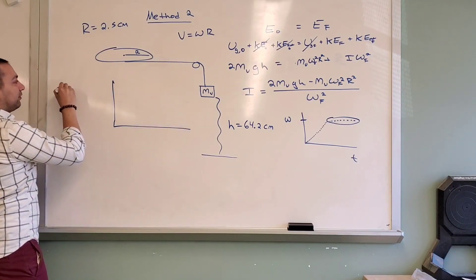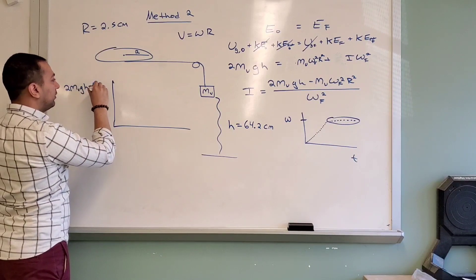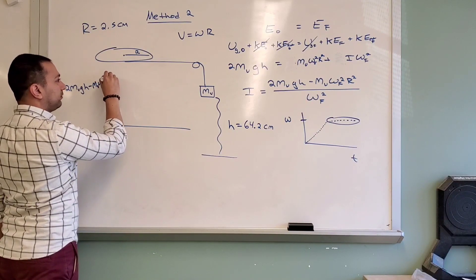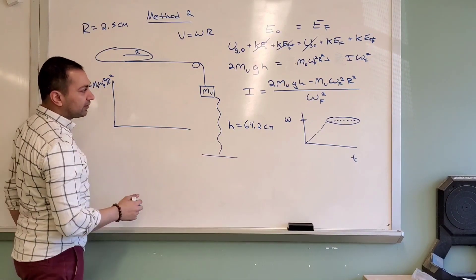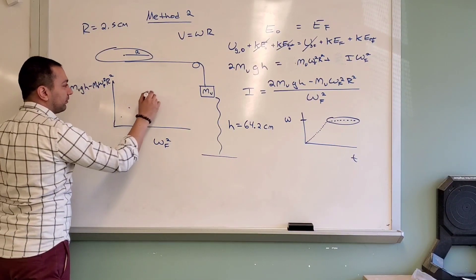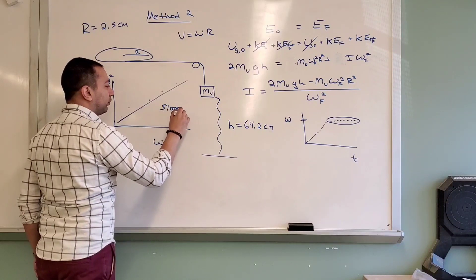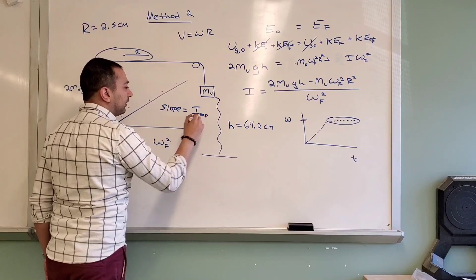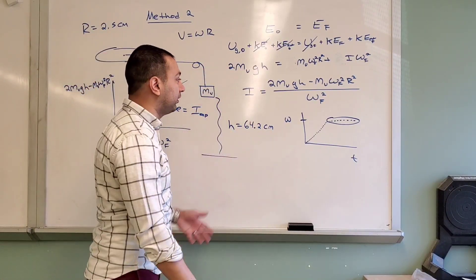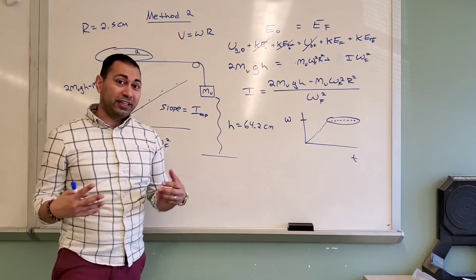For plotting Method 2, the y-axis is 2*m_v*g*h minus m_v*omega_final squared*r squared, and the x-axis is omega_final squared. You plot the points for each trial, draw the best fit line, and the slope of that line equals the experimental value of I — just like in Method 1. This uses the conservation of energy and rotational energy approach to find I for this unusual object.